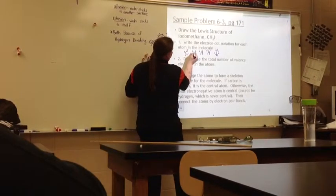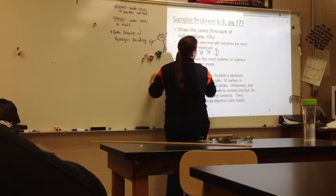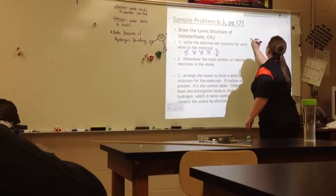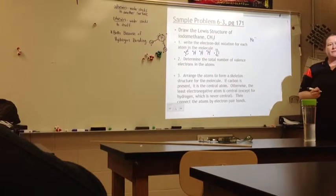Step two: determine the total number of valence electrons. Well, I just drew every single valence electron that these atoms are contributing, so all I need to do is count them. One, two, three, four, five, six, seven, eight, nine, ten, eleven, twelve, thirteen, fourteen. Fourteen electrons. Easy peasy.